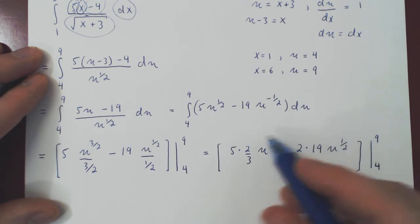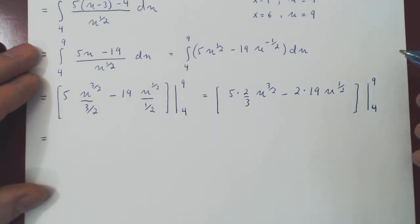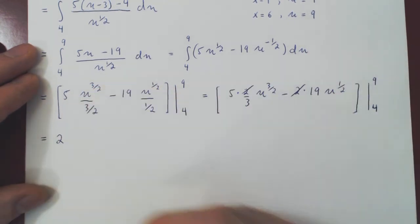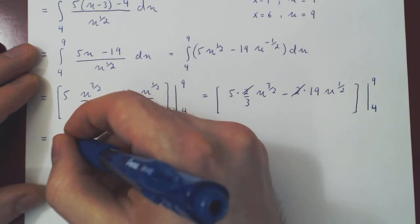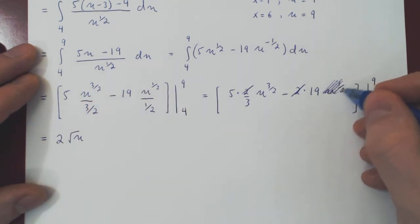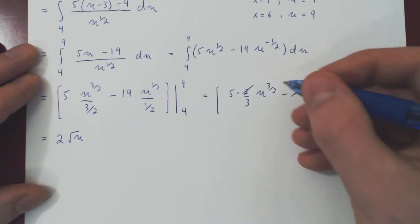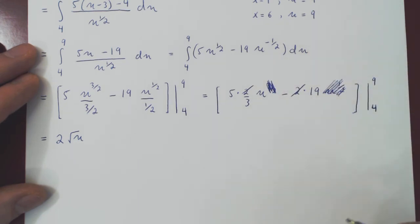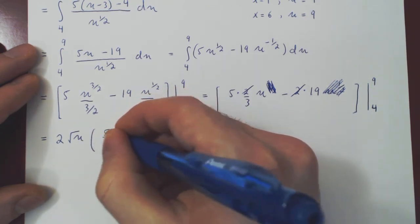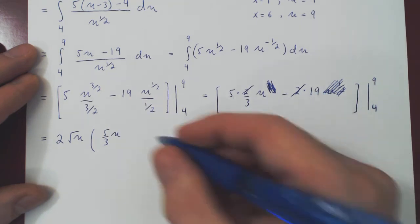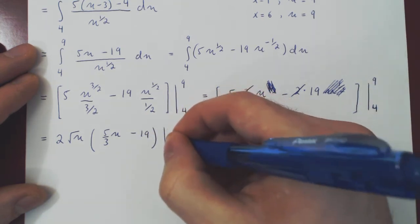Before we plug it in, we will factor and try and make our calculations a little simpler. Well, there's a common factor of 2, and there's either the 1 half, being the smaller power, let's factor it, and we'll just write this as root of u. If you factor it, it's gone. If you take a half away from 3 half, that leaves you with 2 over 2, which is 1, and that leaves you with u. So all you're left with is 5 thirds u minus 19, and we evaluate from 4 to 9. Now we'll plug it in and simplify.